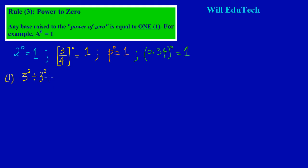Based on rule two — dividing indices of the same base — since the bases are the same, we rewrite the base and subtract the powers. We have a two and we subtract two, giving us three to the power of zero, which equals one.